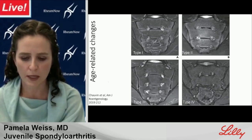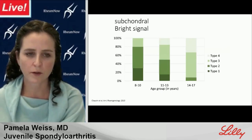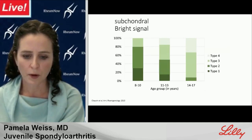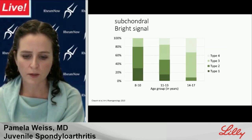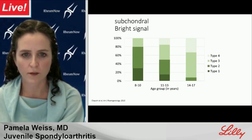Types 1, 2, and 3 are present in the majority of prepubertal children. By the time they approach skeletal maturity, type 1 signal disappears and type 2 signal is present in less than 10%. When stratified by sex, females seem to start out with more type 1 signal but progress to type 4 signal faster.